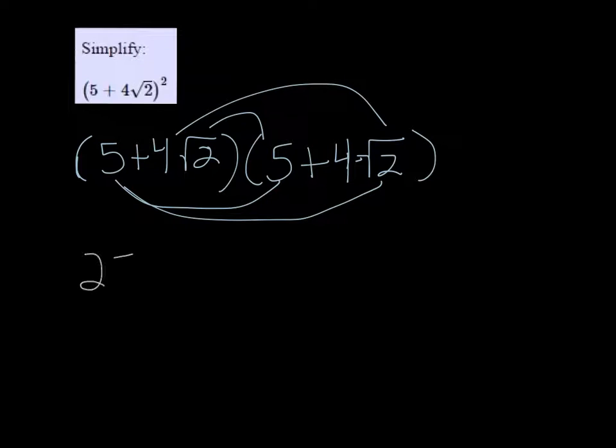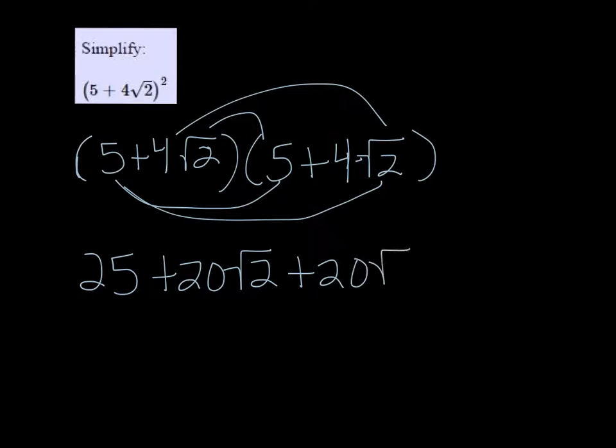So 5 times 5 is 25, and then 5 times 4 root 2 is 20 root 2, and we're going to get another one of those, and then the last are going to be 16 root 4.